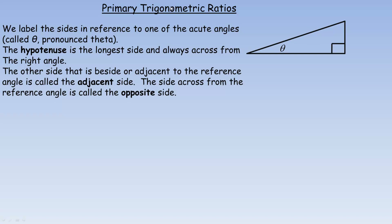In this tutorial, we're going to take a look at what are called the primary trigonometric ratios. There are actually six altogether — three primary ones and three reciprocal ones — but we're only going to deal with the primary ones in this tutorial.